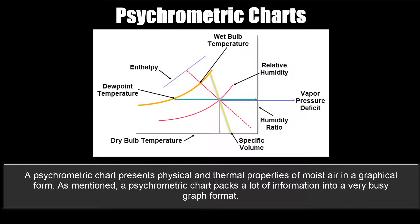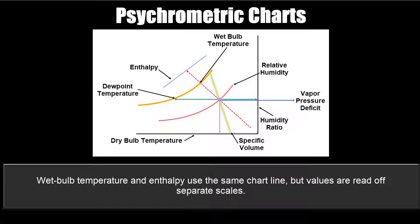A psychrometric chart presents physical and thermal properties of moist air in a graphical form. As mentioned, the chart packs a lot of information into a very busy graph format. Wet bulb temperature and enthalpy use the same chart line, but values are read off separate scales.